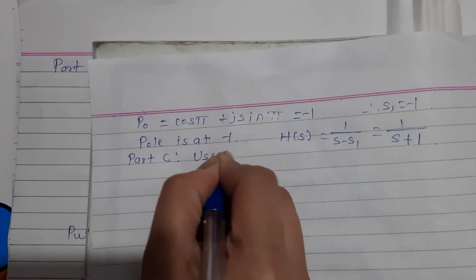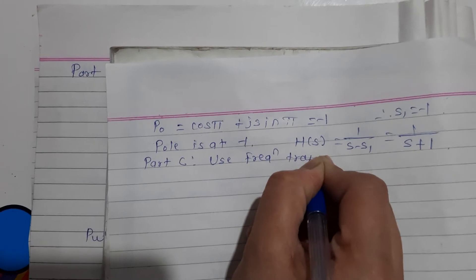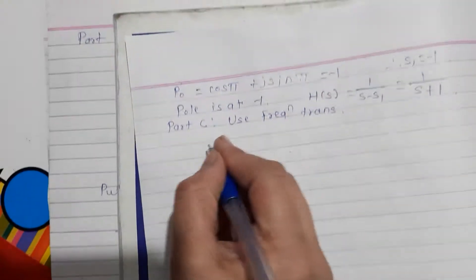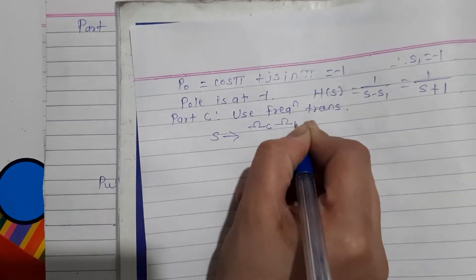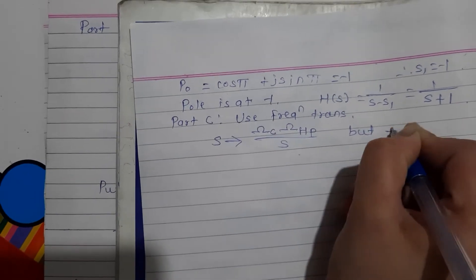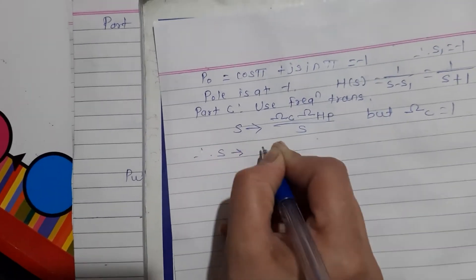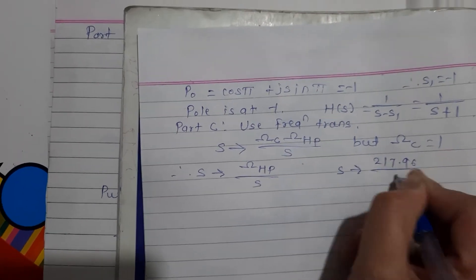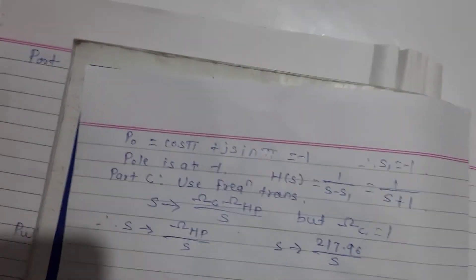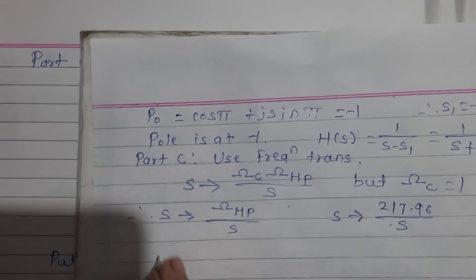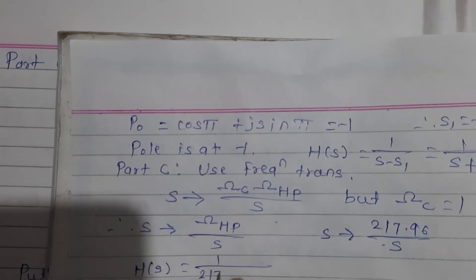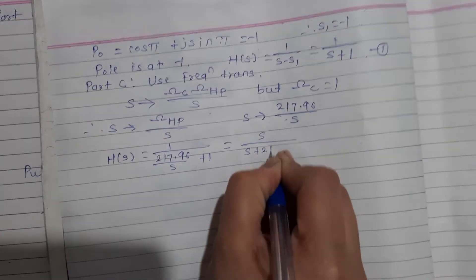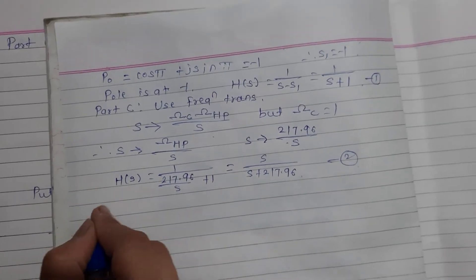Now Part C: use frequency transformation to obtain the transfer function of the analog high-pass filter. Using the frequency transformation equation, s maps to Omega_HP divided by s, which is 217.96 divided by s. Putting this value in equation 1, H(s) equals 1 divided by (217.96 divided by s plus 1), giving H(s) equals s divided by (s plus 217.96). This is equation 2.